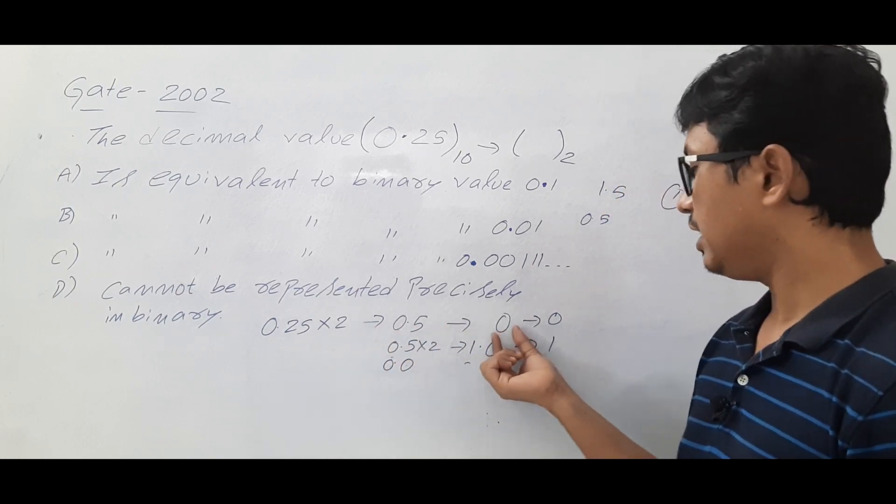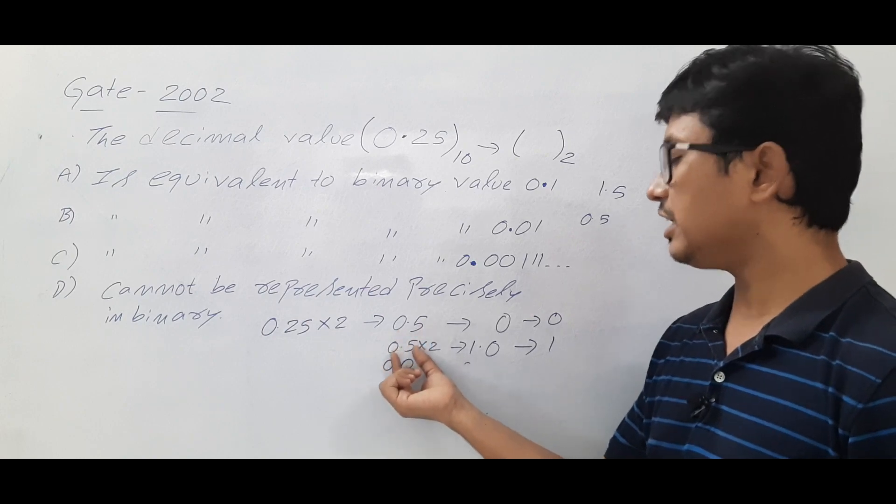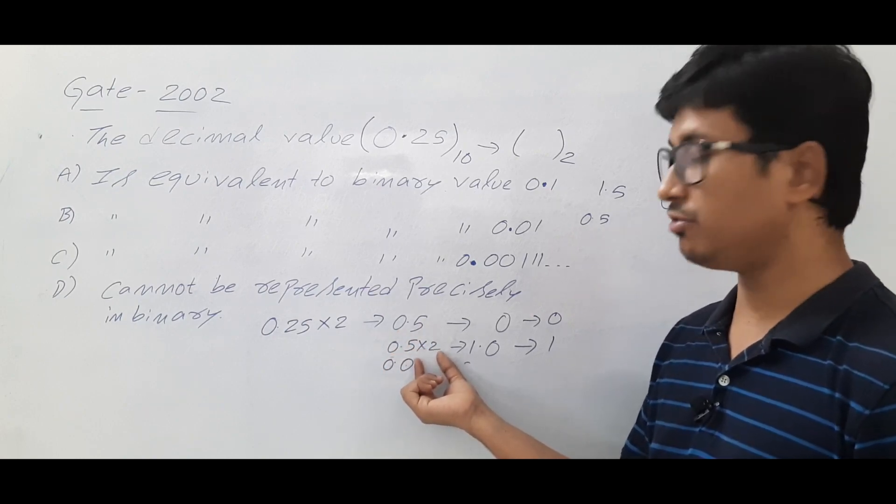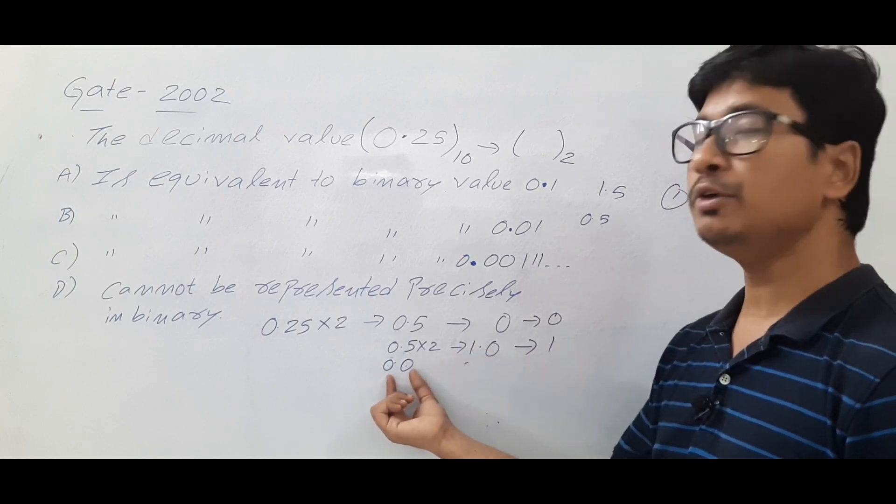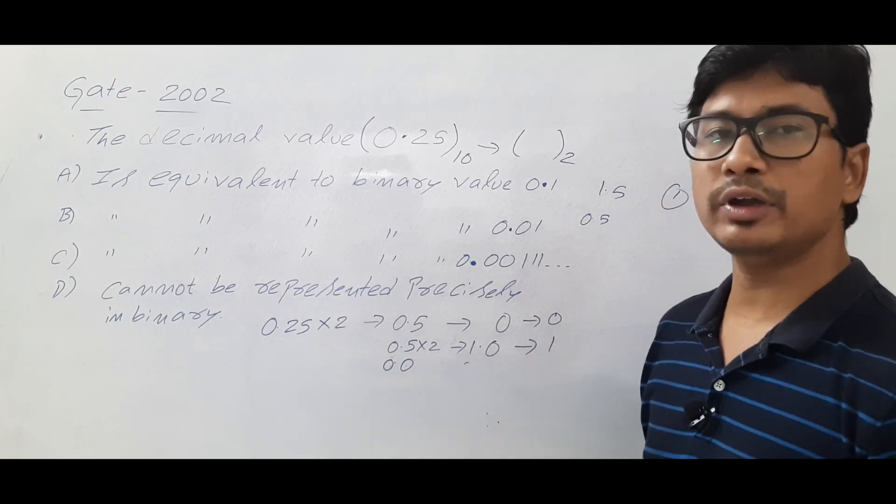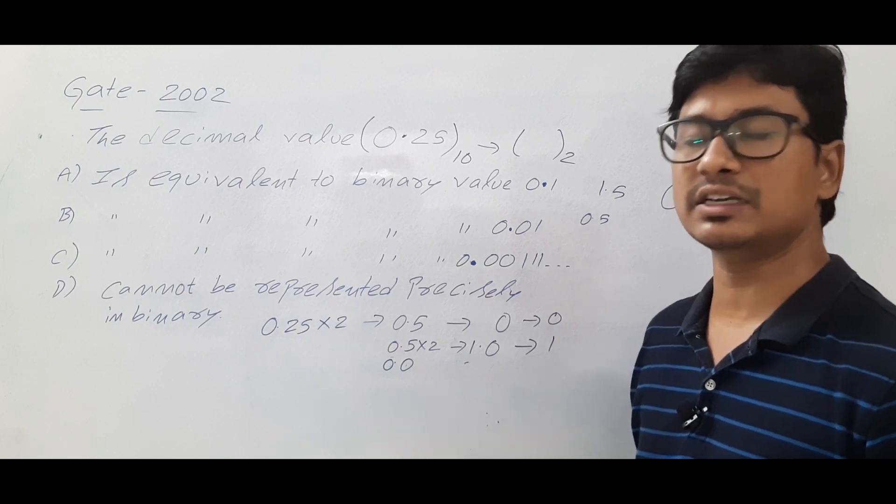I got 0.5. I kept the 0 here and take the 0.5, again multiply with 2, I will get 1.0. Keep the 1 here and remaining part will be 0.0. 0.0 if you multiply with 2 you will get 0.